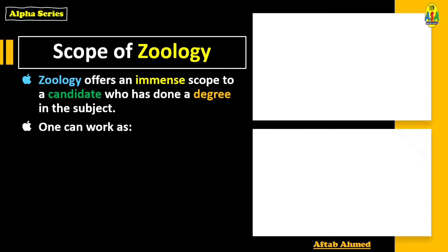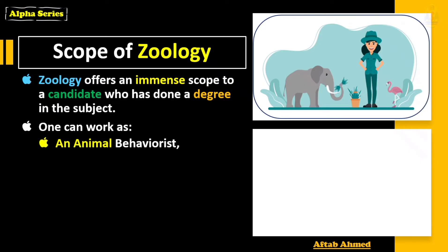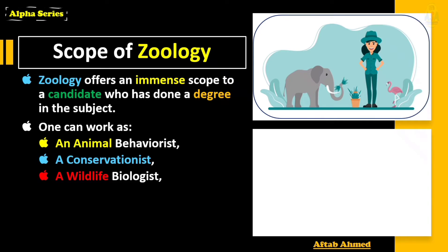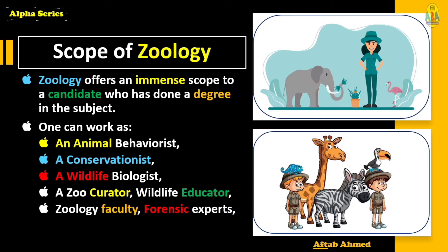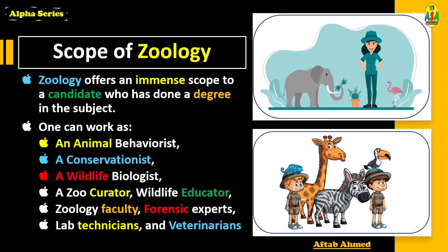The scope of zoology: zoology offers an immense scope to a candidate who has done their master's degree in the subject. One can work as an animal behaviorist, a conservationist, a wildlife biologist, a zoo curator, a wildlife educator, zoology faculty, a forensic expert, a lab technician, or a veterinarian.